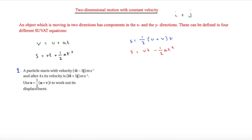The first question says that a particle starts with velocity 4i minus 3j and after four seconds its velocity is 8i plus 5j. We have to use s equals half of u plus v times t to work out its displacement. We'll set up our SUVAT table. If you haven't watched my SUVAT video on one-dimensional motion, it would be good to watch that first. This is exactly the same but two-dimensional — I'm going to use vector notation instead of i and j, though you can keep it in i and j if you want.